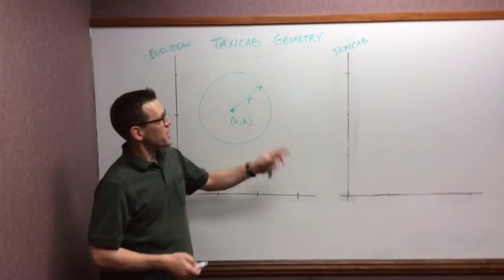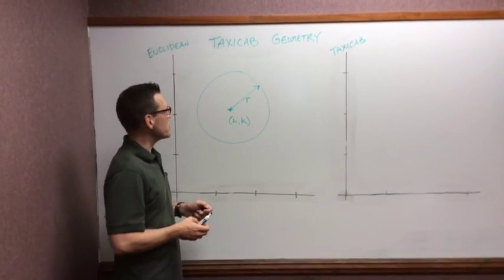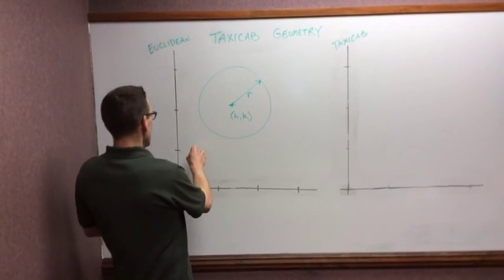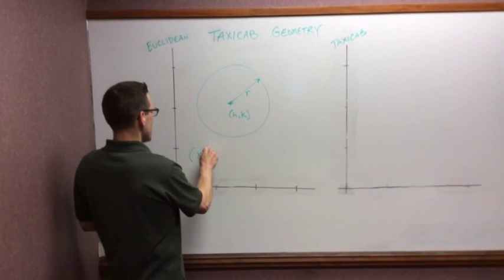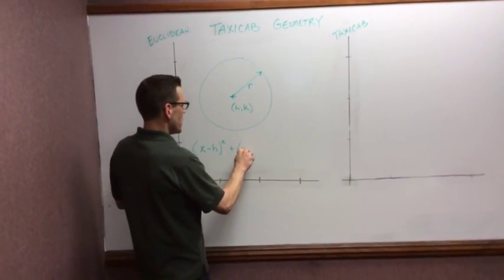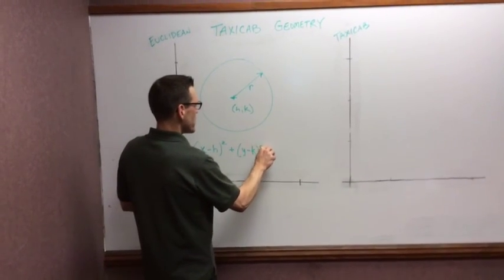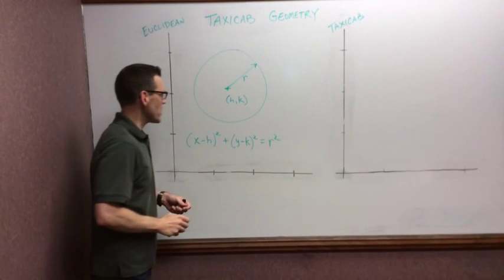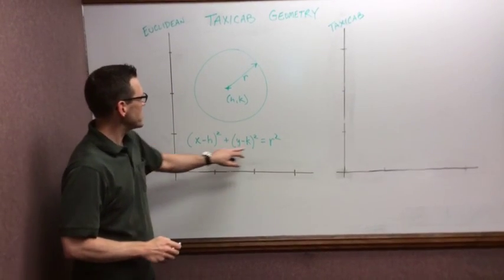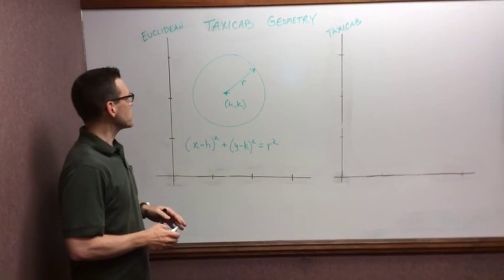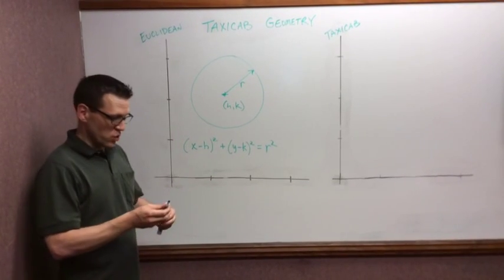We're going to expect to see some different results when we look at Taxi Cab geometry. But let's recall the formula for a circle here. It's going to be (x - h)² + (y - k)² = r². Put in the center points here, plug in my radius here, and that gives me the equation to map that circle. And that's the Euclidean geometry.